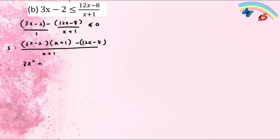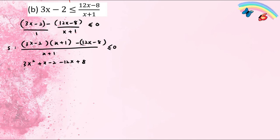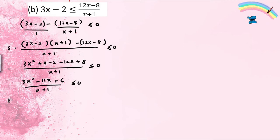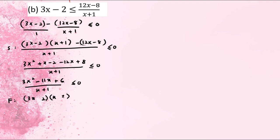Expand everything and accumulate: 3x² + x − 2 − 12x + 8, all over (x + 1), less than or equal to zero. Simplifying further: 3x² − 11x + 6 over (x + 1) ≤ 0. Factorize the numerator: (3x − 2)(x − 3) over (x + 1) ≤ 0.